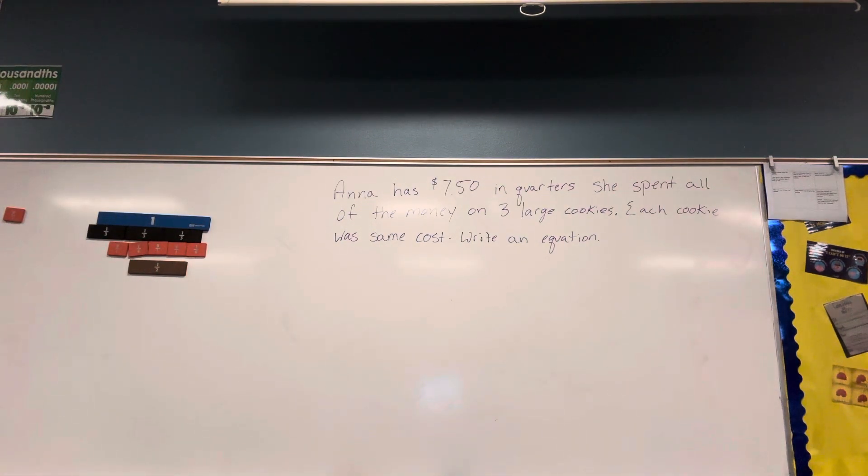Anna has $7.50 in quarters. She spent all of the money on three large cookies. Each cookie was the same cost. Write an equation.